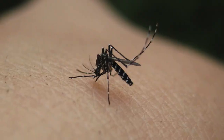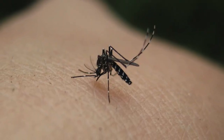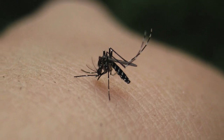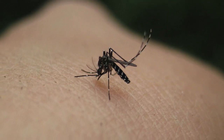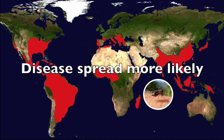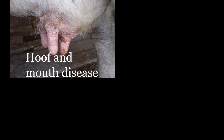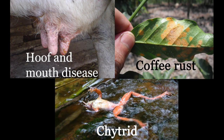When an insect that transmits infectious diseases, like the Asian tiger mosquito, can thrive in many climates, the global spread of diseases it transmits becomes more likely. Scientists expect to see more mysterious diseases showing up in new places in the coming decades. And it's not only human diseases that are spreading — global trade and travel are also spreading diseases that threaten livestock, crops, and wildlife.